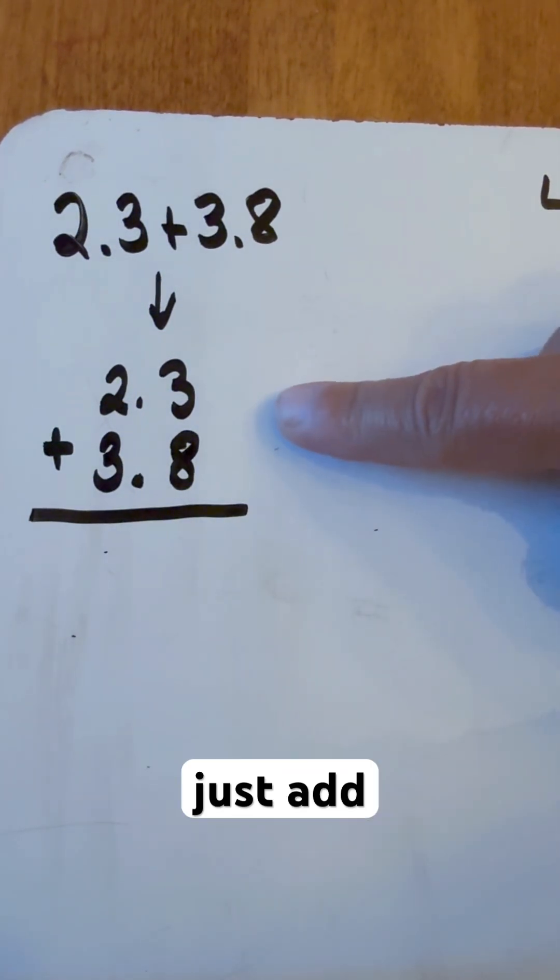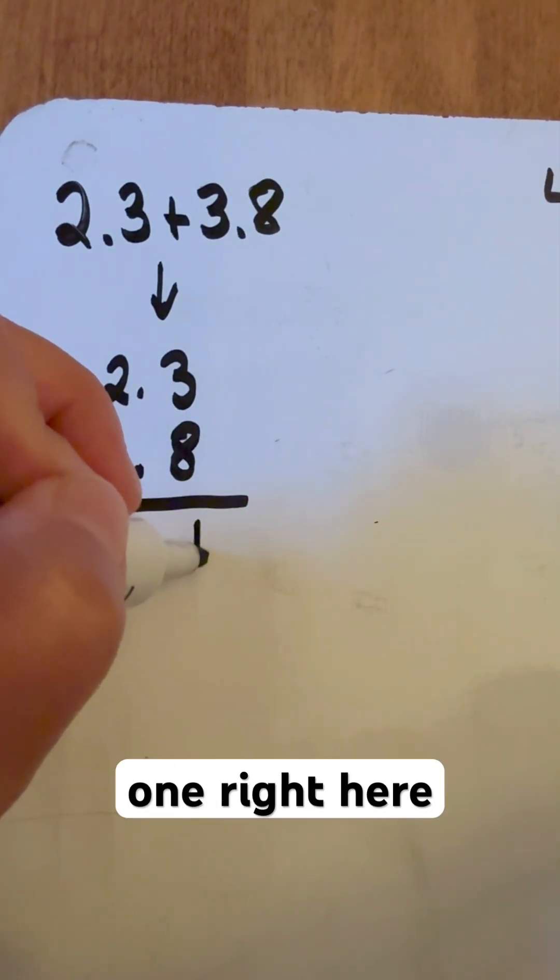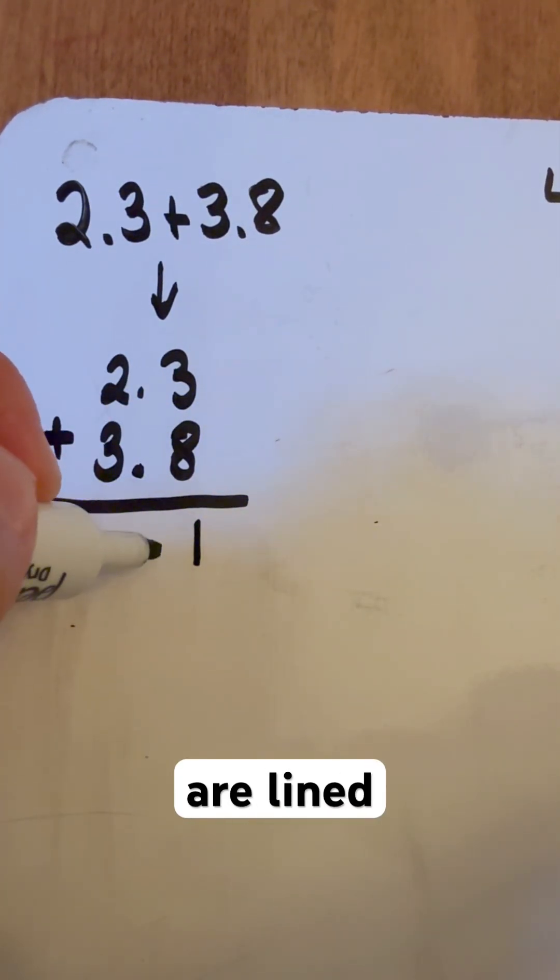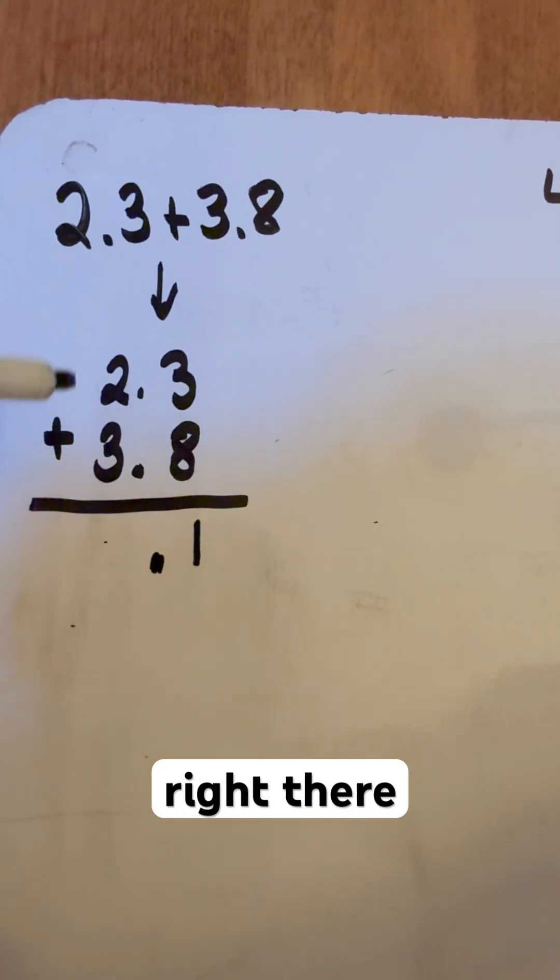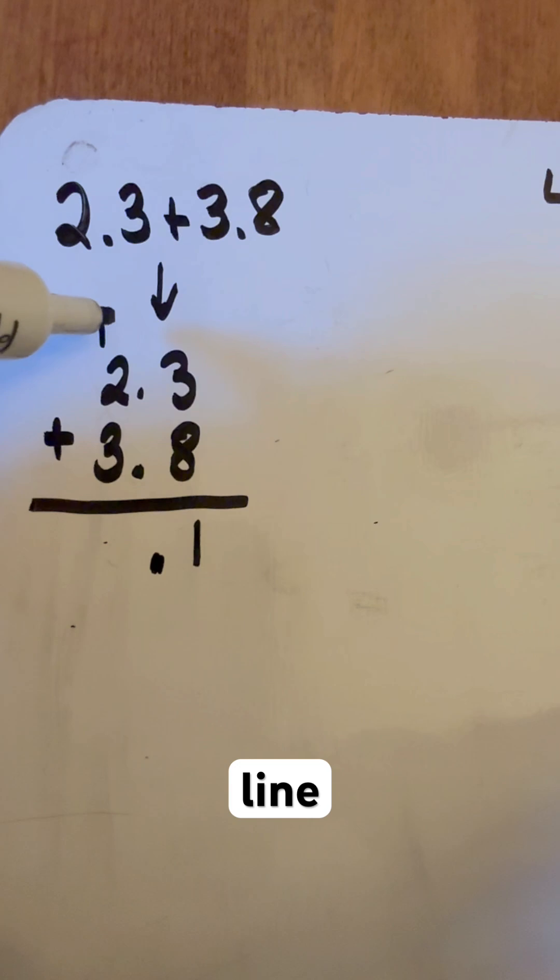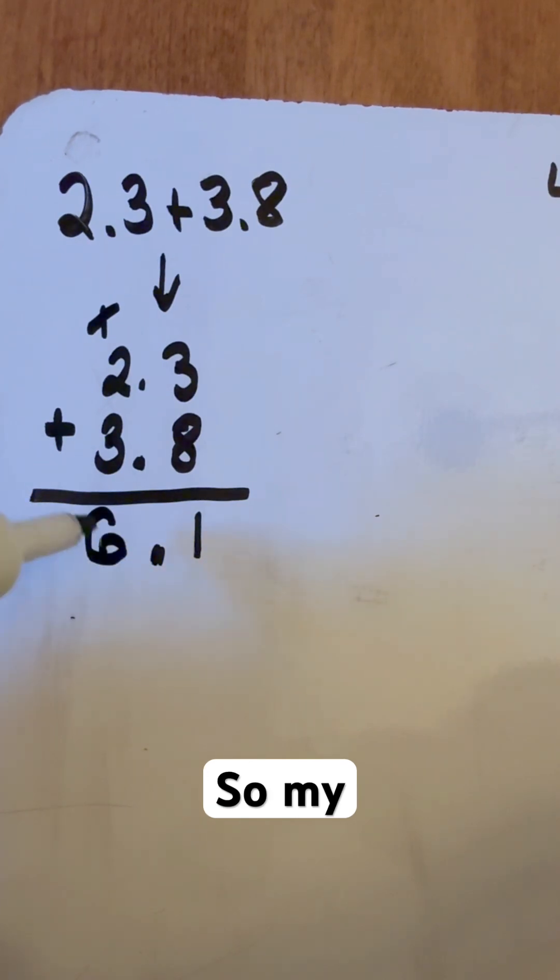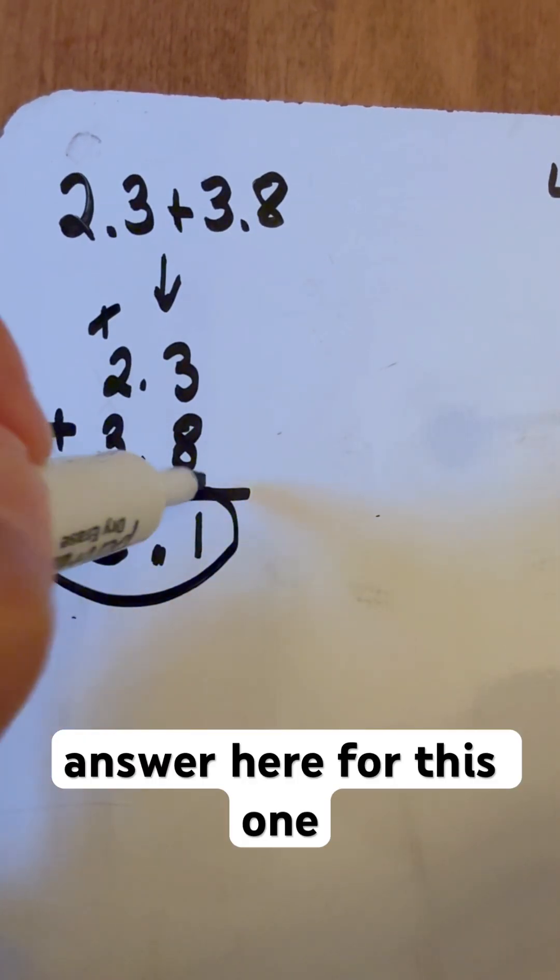And then when you're adding, you just add as normal. So 3 and 8 is going to be 11. So we're going to put the one right here. Now our decimals are lined up here, so we're going to put that decimal right there and we're going to carry the other one up to the top to the second line. And now we're going to add that together. So 1 plus 2 is 3 plus the other 3 is 6. So my answer here for this one, 6.1.